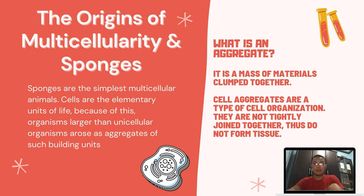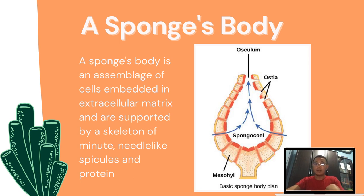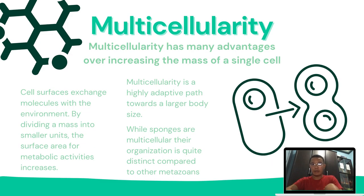Sponges are the simplest multicellular animals. Because cells are the elementary units of life, organisms larger than unicellular organisms arose as aggregates of such building units. A sponge body is an assemblage of cells embedded in extracellular matrix and supported by a skeleton of minute needle-like spicules and protein. Multicellularity has many advantages over increasing the mass of a single cell. Because cell surfaces exchange molecules with the environment, dividing a mass into smaller units greatly increases the surface area available for metabolic activities. Multicellularity is a highly adaptive path toward a larger body size.